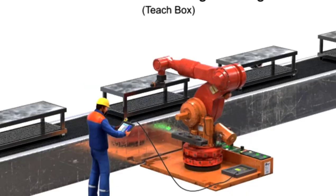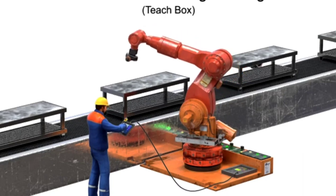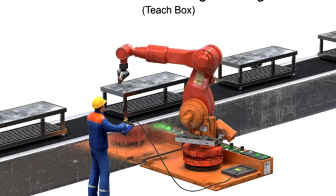Teach pendant programming is a method by which the operator steps the robot through the program point by point while recording the coordinates for each point.